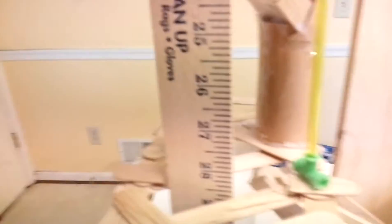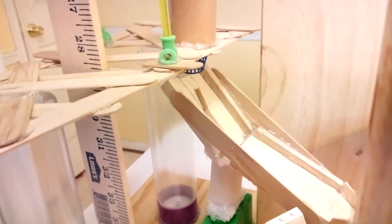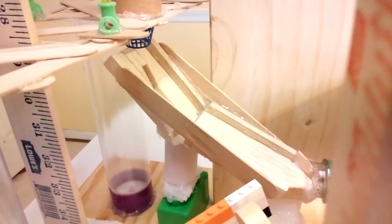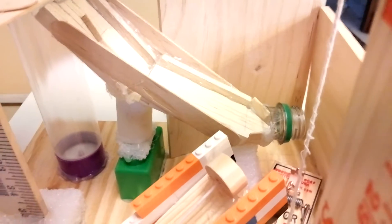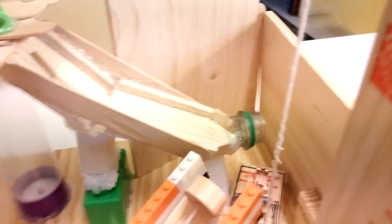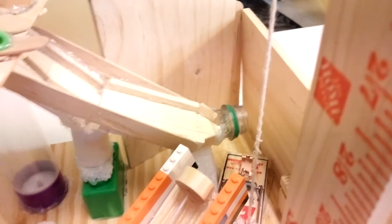As they are split by the wedge, they roll out into this bottle cap, knocking into a marble that then falls onto a mousetrap. Once the mousetrap snaps, it pulls up this car on the incline plane.